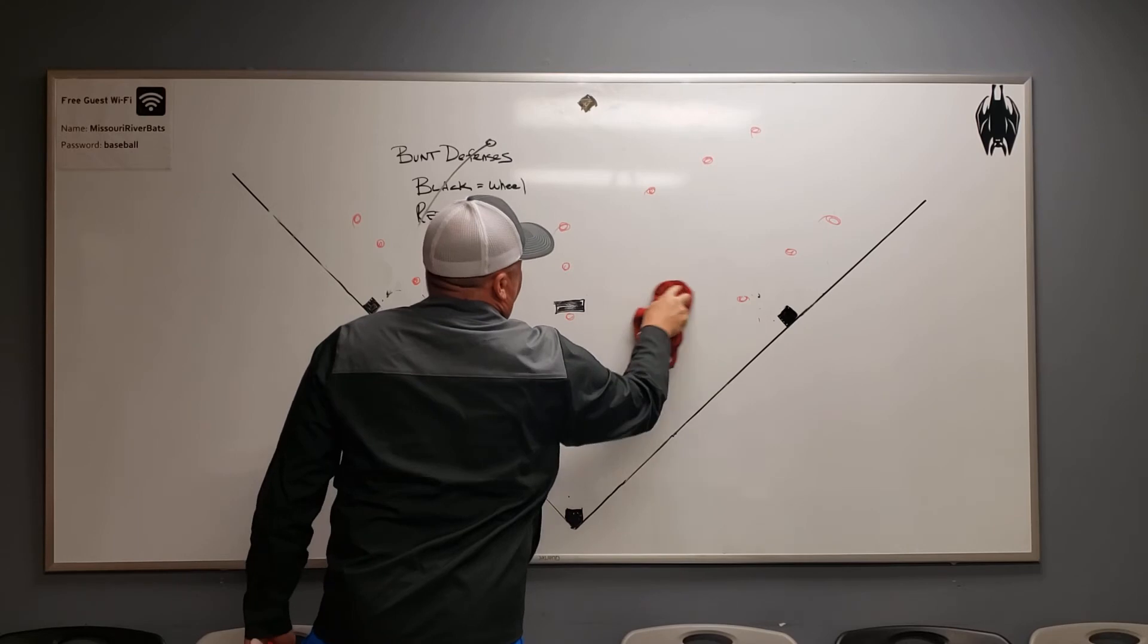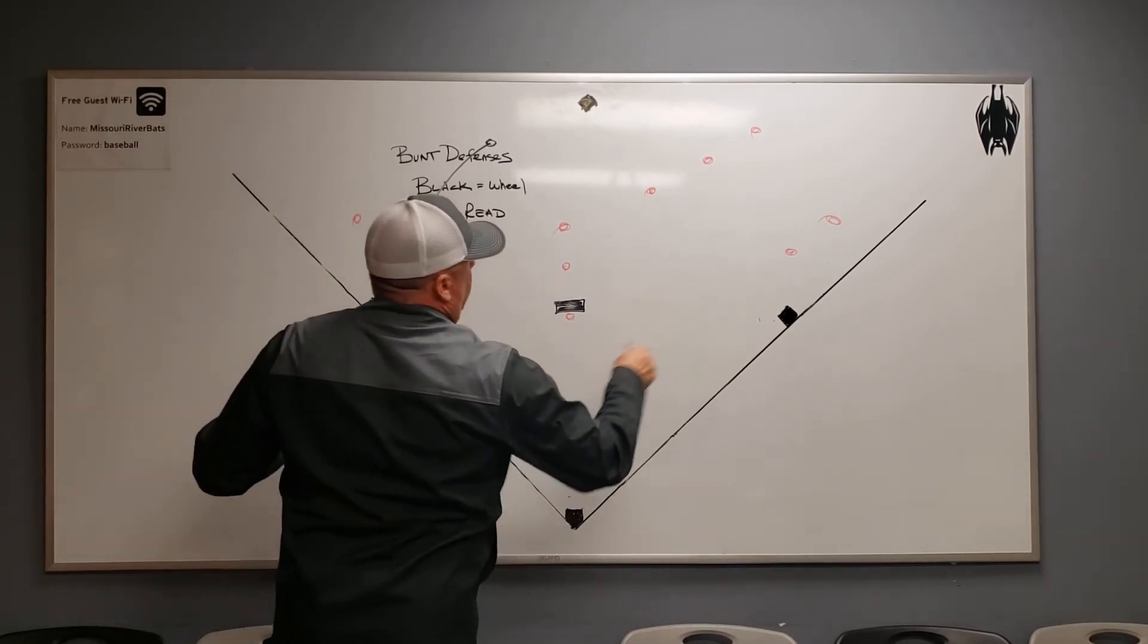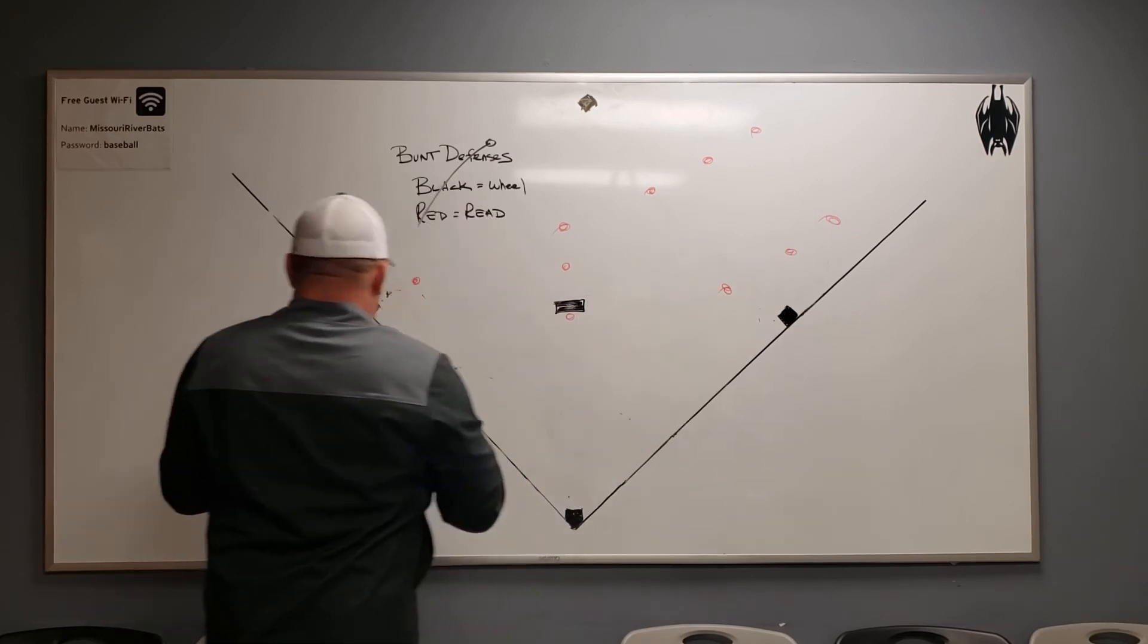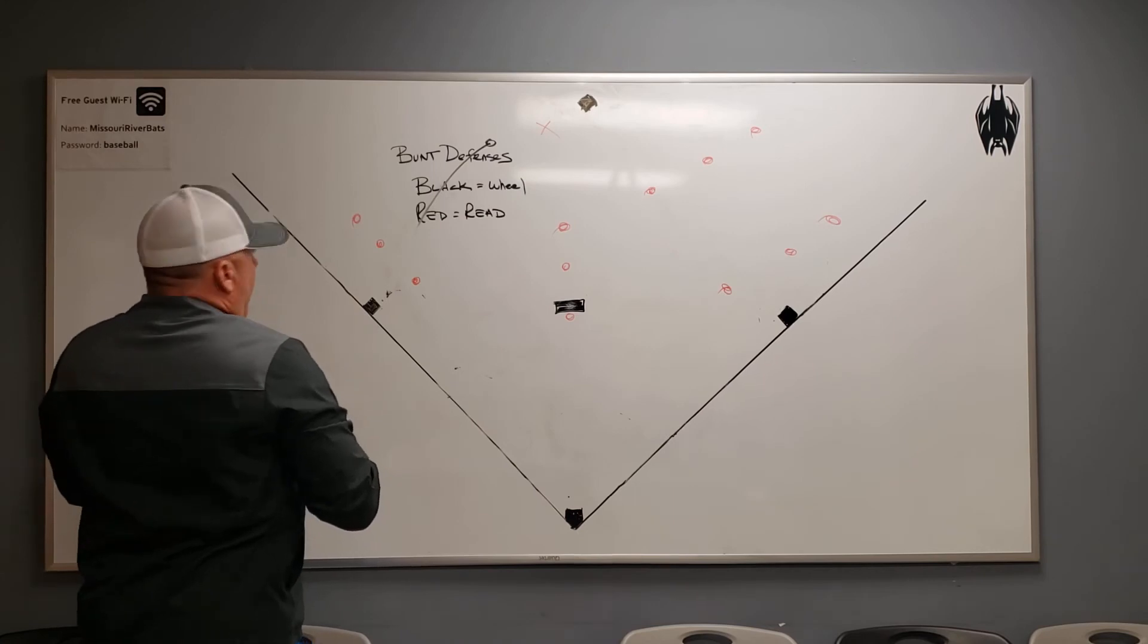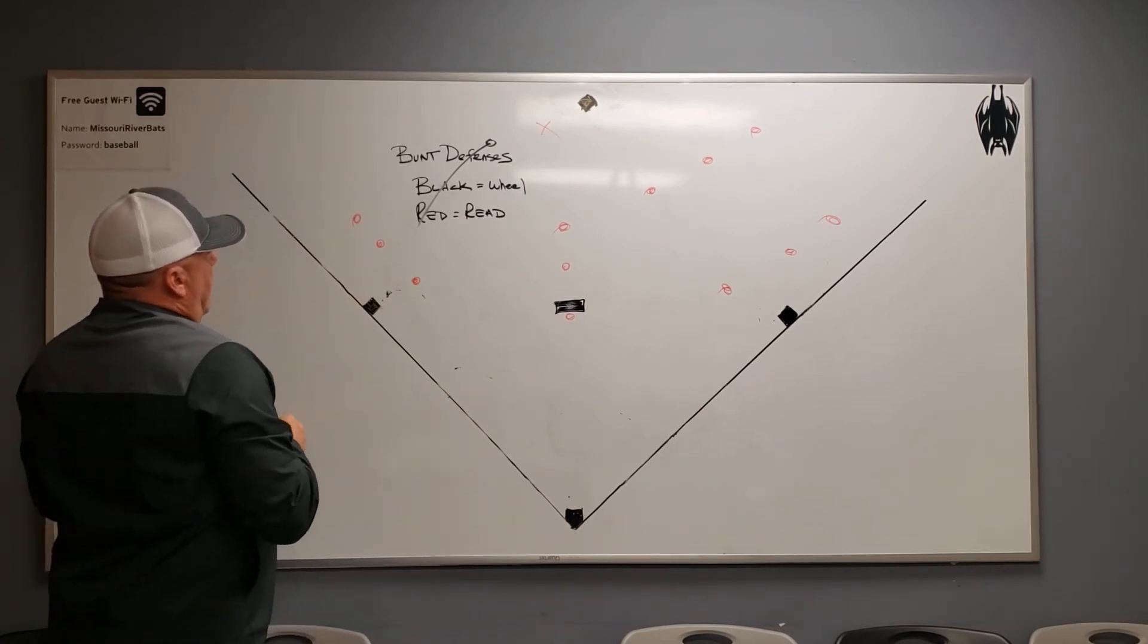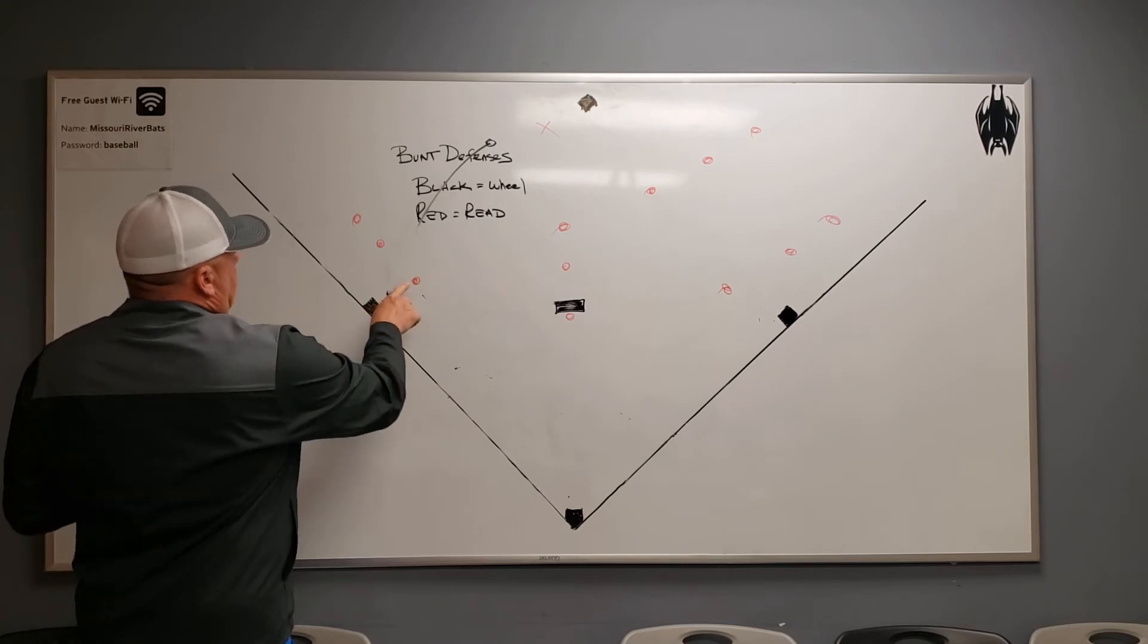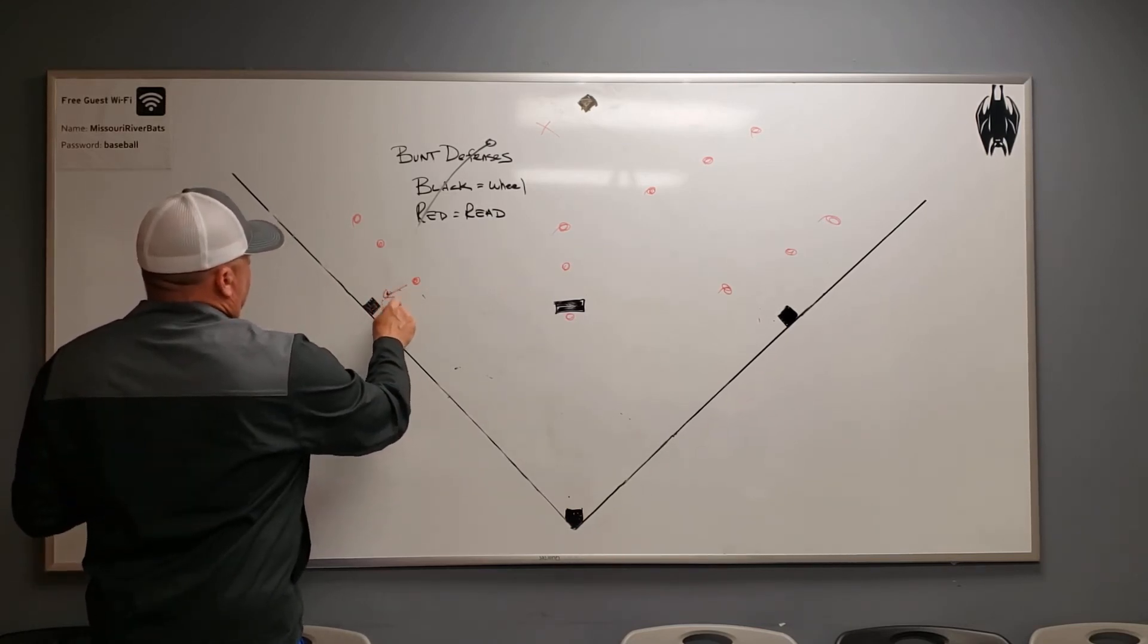So, on the read defense, we want an out. We want an out either way. But we ideally want to cut down that runner. So, what we're going to do in that case is there's a runner probably over here. And we call read. So, a red, which is read. And what's going to happen is the third baseman is going to stay home. He's going to just cover the base. Go right there.